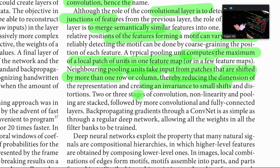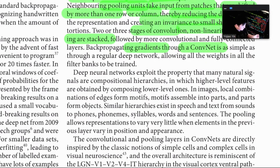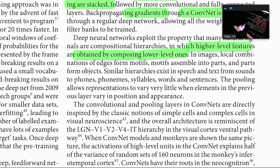Two or three stages of convolution, non-linearity, and pooling layers are stacked, followed by more convolutional and fully connected layers. Backpropagating gradients through a ConvNet is as simple as through a regular deep network, allowing all the weights in all filter banks to be trained. Deep neural networks exploit the property that many natural signals are compositional — higher level features are obtained by composing lower level ones. In images, local combinations of edges form motifs, motifs assemble into parts, and parts form objects. Similar hierarchies exist in speech and text — from sounds to phonemes, syllables, words, and sentences.